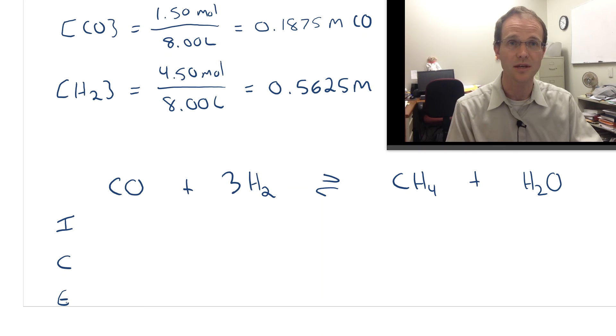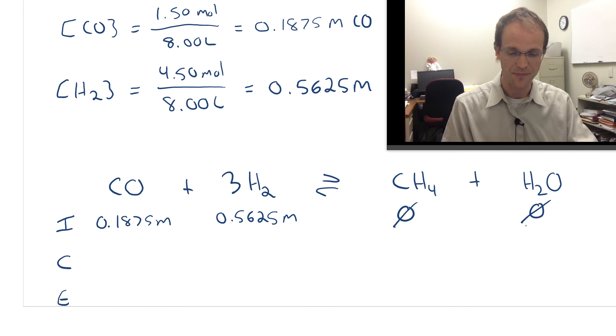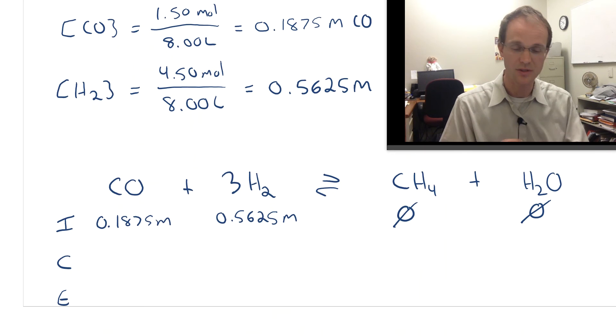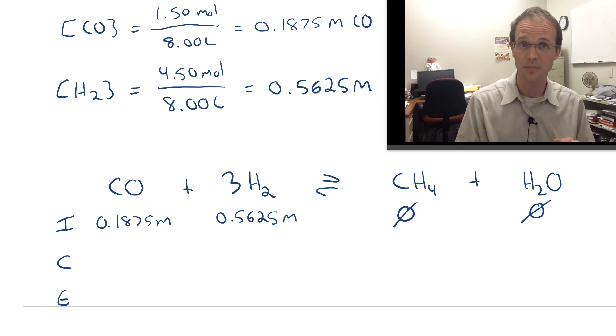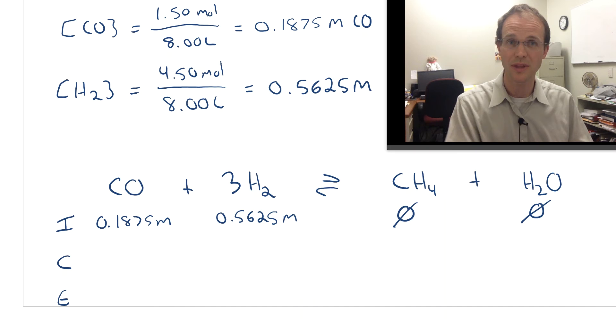We have our initial concentrations that we just calculated: 0.1875 molar and 0.5625 molar. The other ones are going to be 0 because we weren't told we had any. Now, what's going to happen as we run this reaction? We're going to make methane and water, but at the same time we're also going to be using up carbon monoxide and hydrogen. That's what we do in that change row—we figure out how things are changing, and we do that with stoichiometry.